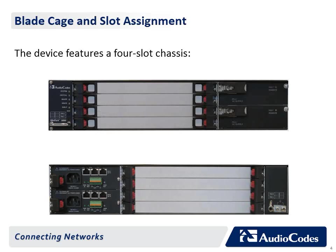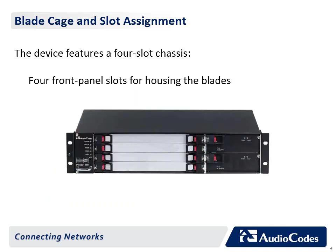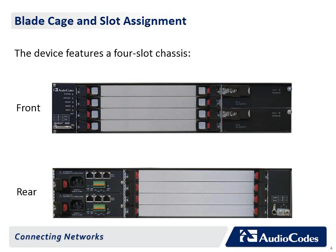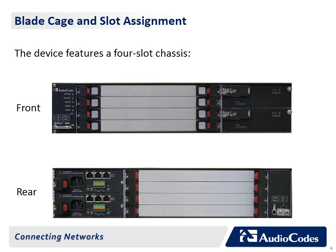The device is a 4-slot chassis with 4 front and 4 rear slots that houses communication blades, synchronization and alarm blades, and rear transition modules, also known as RTM. The device's chassis modular design allows easy add and replacement of modules. The slots are numbered from 1 to 4, where slot 1 is at the bottom and slot 4 is at the top of the blade cage. This figure displays the device without communication blades.